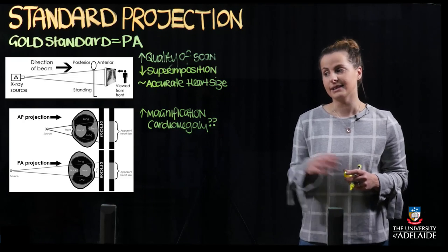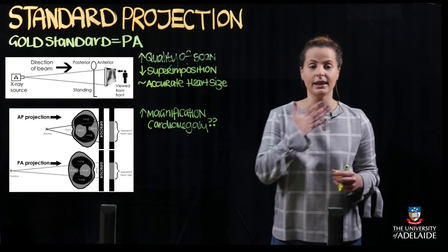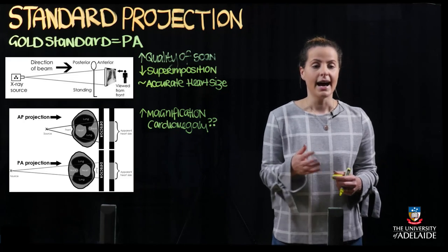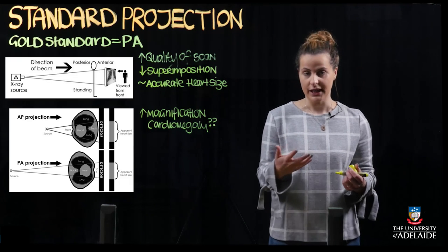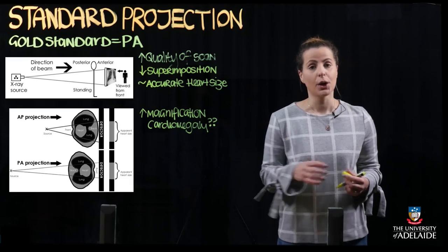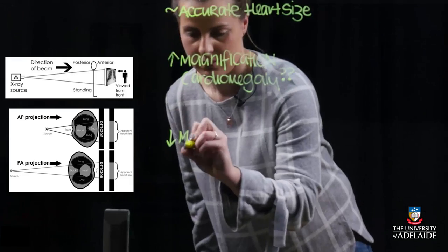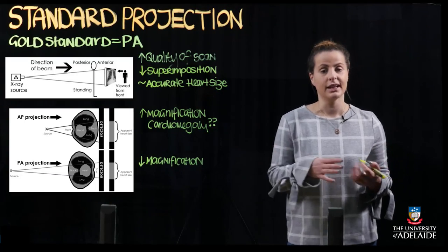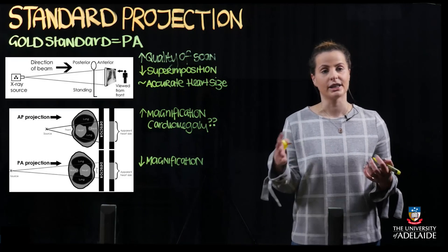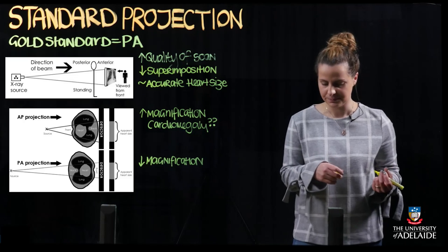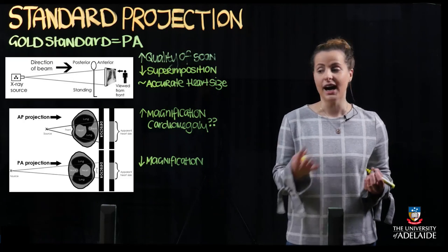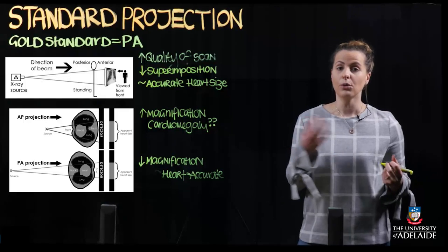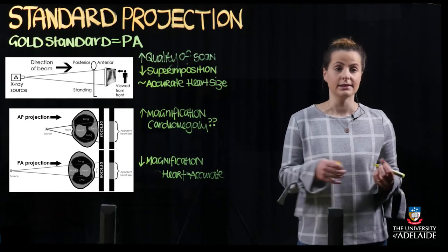In contrast, on the PA projection we can see that the anterior structures — the heart and chest cavity — are going to be closest to the film receptor. As a result, there is not as much influence of magnification. Magnification is minimized by using a narrower beam, produced by the x-ray source being a further distance from the patient. As a result, the heart size is going to be more accurate and representative of the actual size.